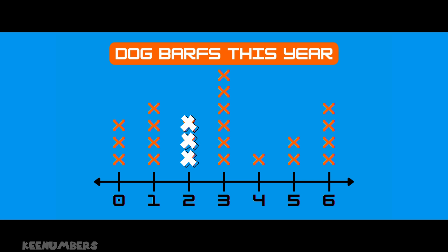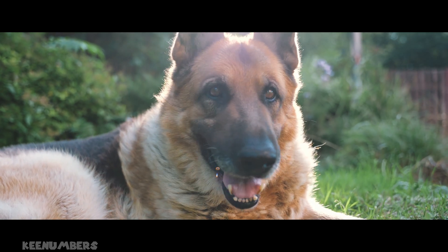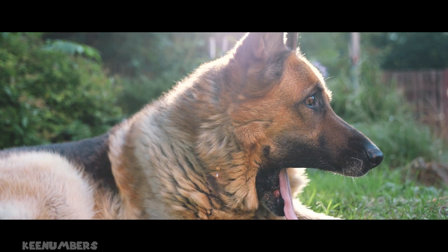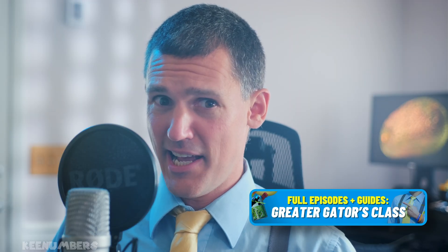How many dogs didn't barf this year? If they didn't barf, that means they barfed zero times. Look at the zero — how many X marks are above the zero? One, two, three. Three dogs had zero barfs this year. Good for them — they kept their kibble down.